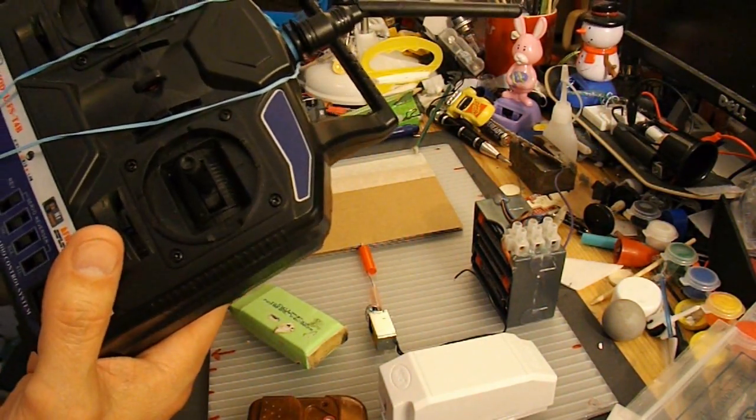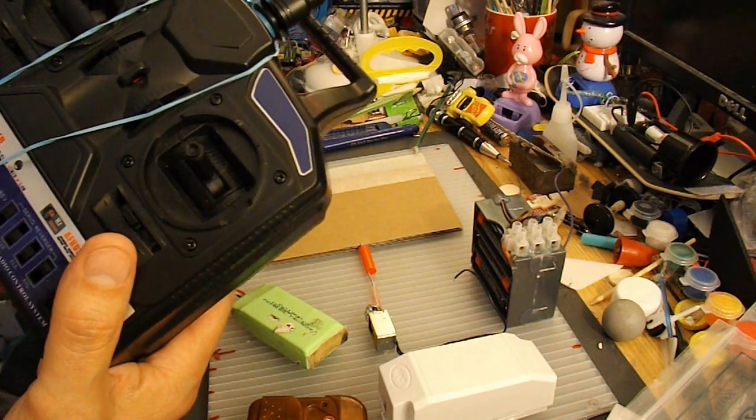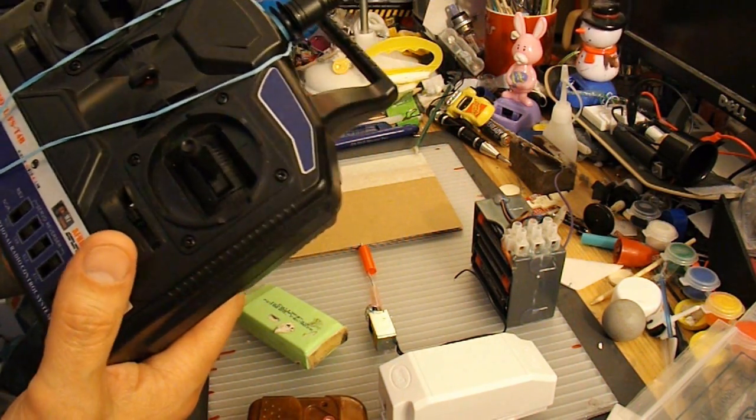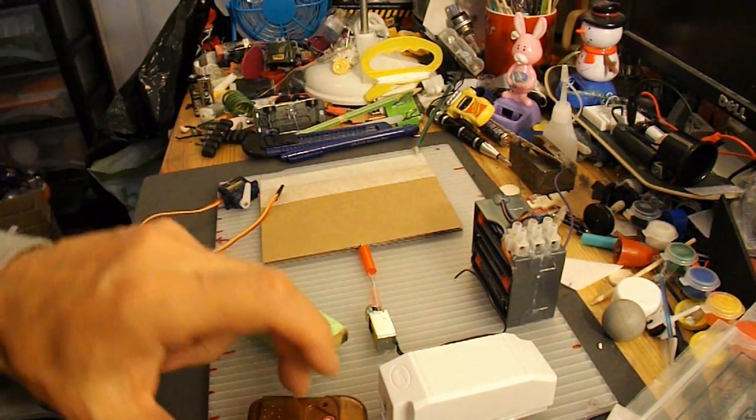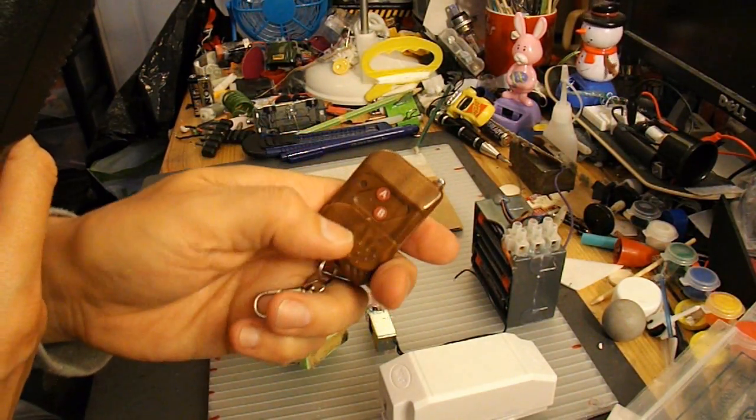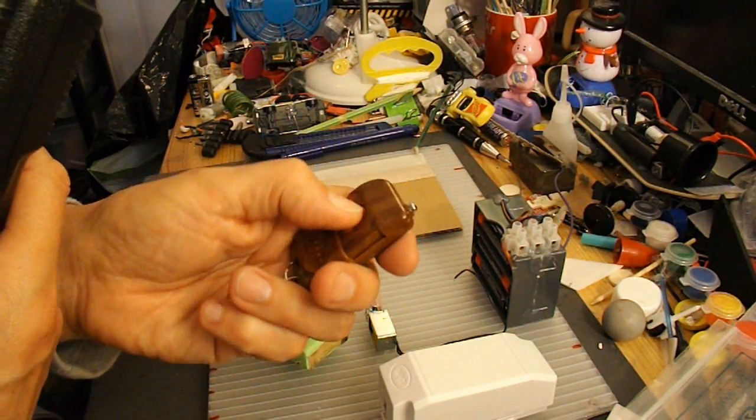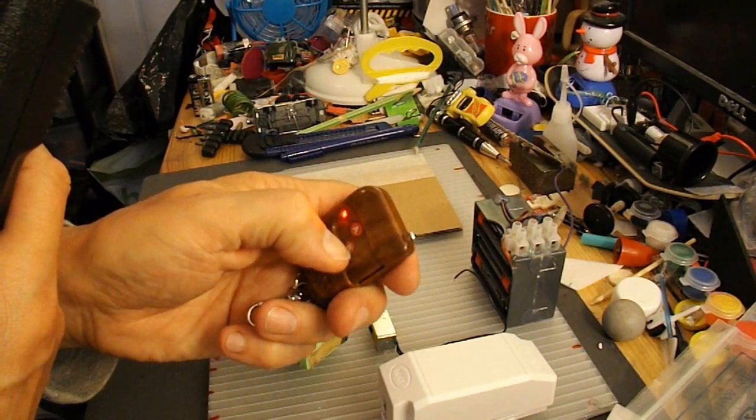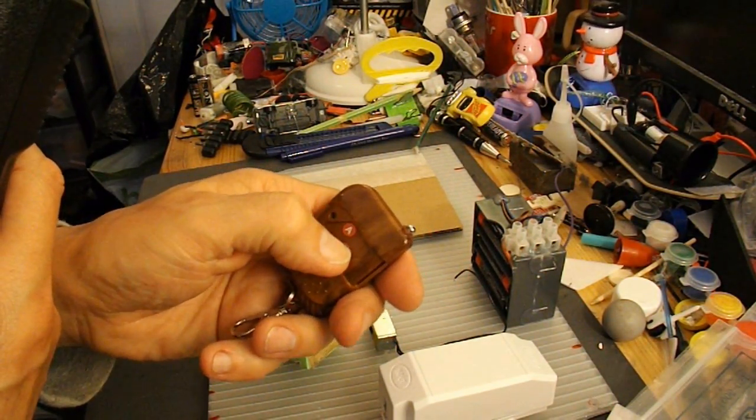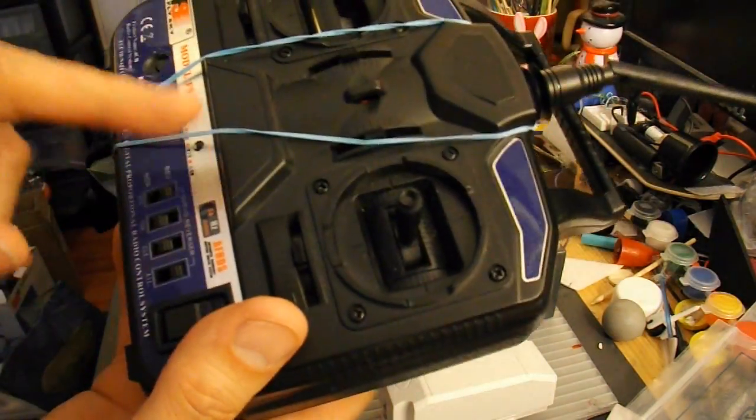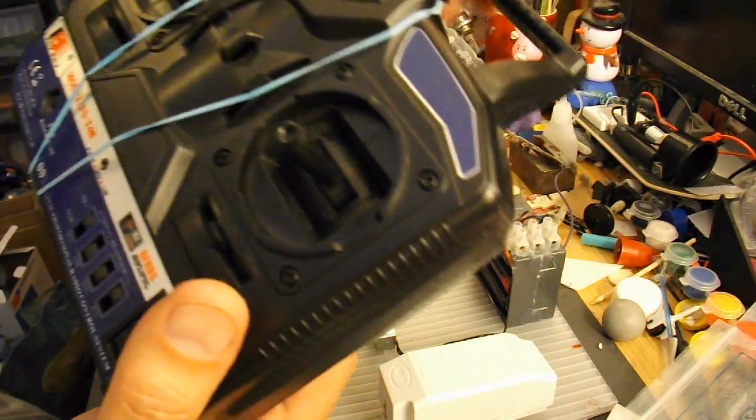And I said at the time that was a rather expensive way of making a radio control door lock and suggested that you could use a single channel radio control remote transmitter and receiver like this one. I think these are about 30 quid, something like that.